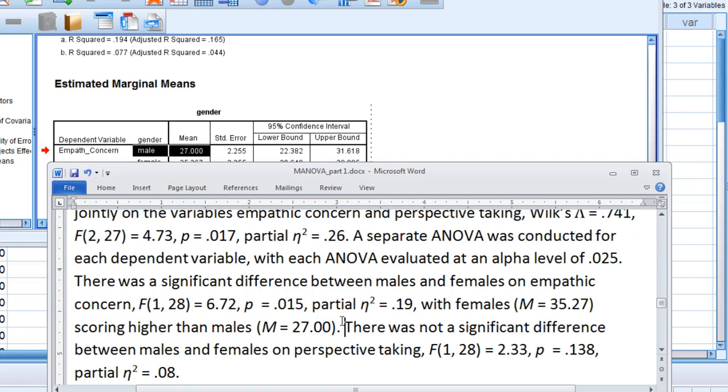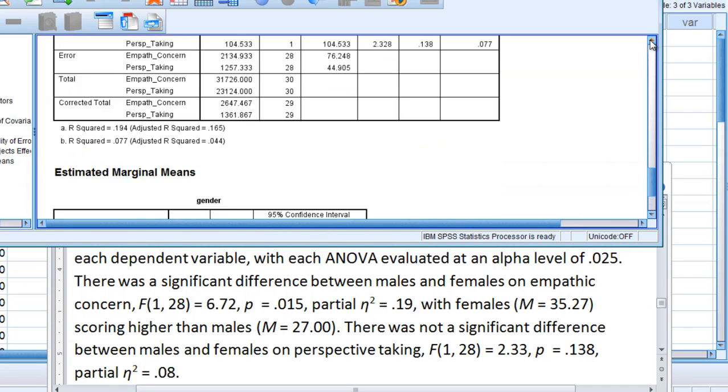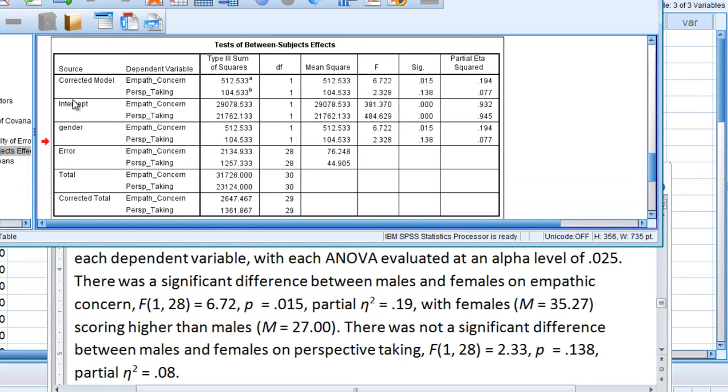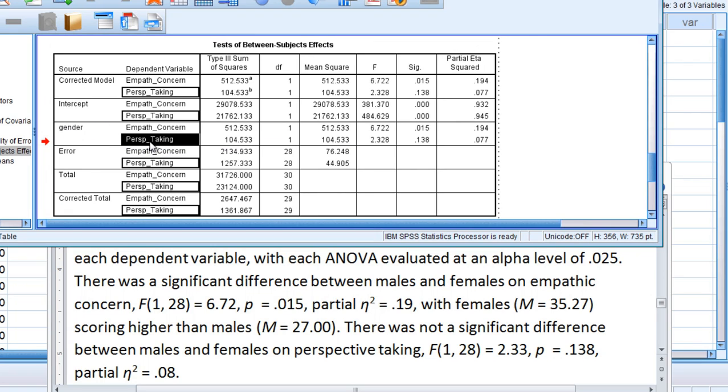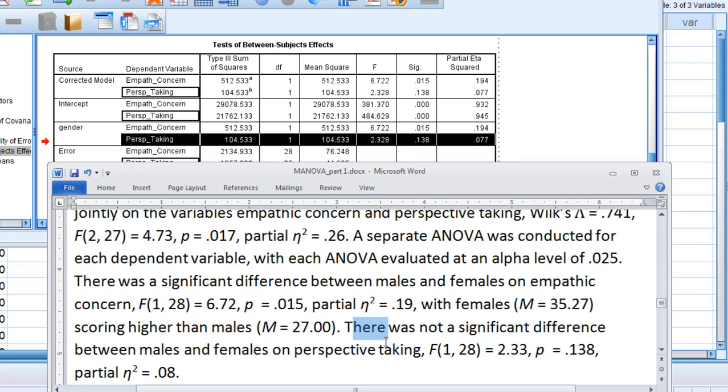And then going to our last ANOVA result, let's go back up here for a minute. Here we have this result, perspective taking. I say there was not a significant difference between males and females on perspective taking.